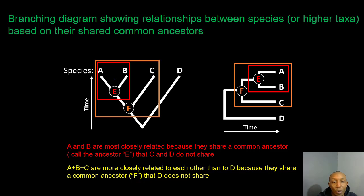Points A and B are most closely related because they share a common ancestor at point E. Both split off right here at point E. They do not share that same common ancestor with points C and D, so points A and B will be more closely related than points C and D.